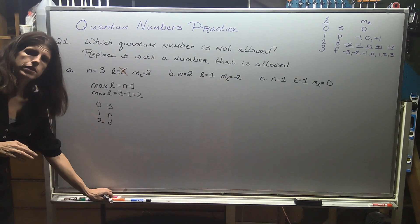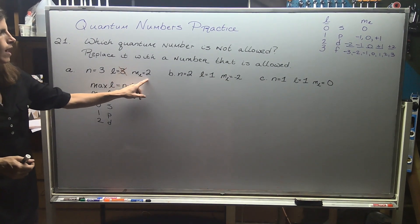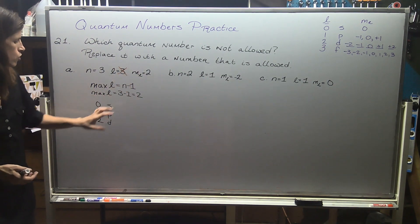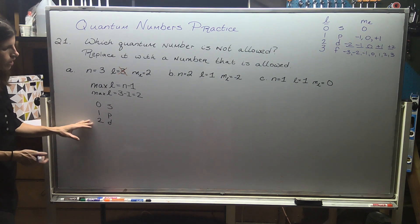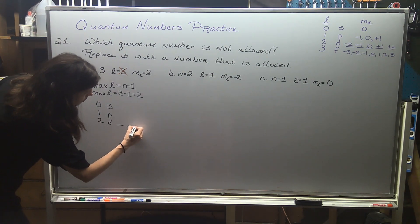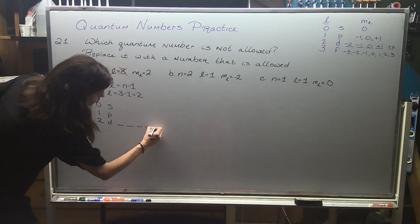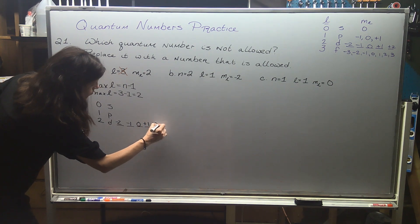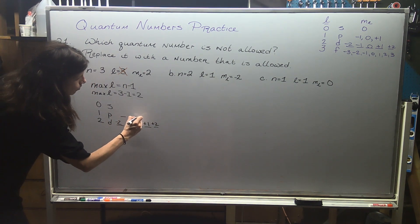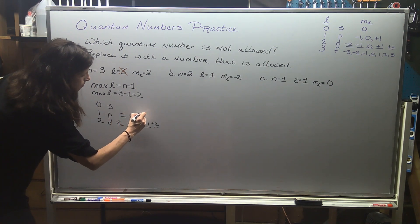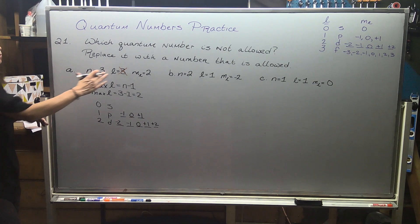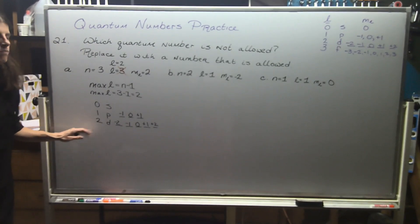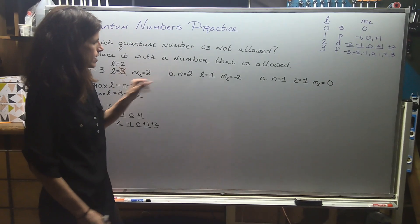When attempting to fix this, I also look at my ml value. L equals 2 tells me I'm in the d subshell, which has five orbitals and ml can range from negative 2 all the way up to positive 2. I can't substitute a p because p only does negative 1, 0, and positive 1 — so I'm restricted to l equals 2 for my correction. Next: n equals 2 and l equals 1 — that sounds like a good combination since max l is 1.